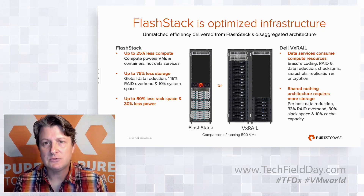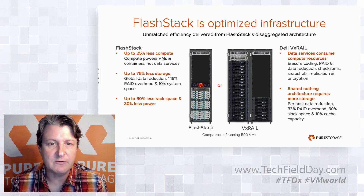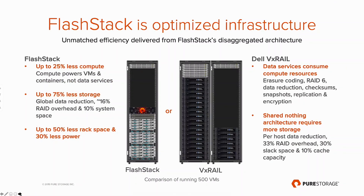When we use public sizing tools, what you find is when you try to put the same workload — in this example, 500 VMs, a mix between some generic tier-two VSIs and some transactional database virtual machines — you find a significant reduction in the overall infrastructure components required and the total cost of the infrastructure underneath VCF. Up to 25% less compute is required with FlashStack compared to VxRail.